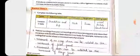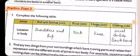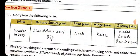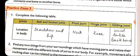Next is Practice Zone 3, where you have to find the location of the joints. The ball and socket joint is present in the shoulder and the hip, allowing the arm and leg to move freely. The pivot joint is present in the neck, in the first two vertebrae, which helps in the movement of our head.